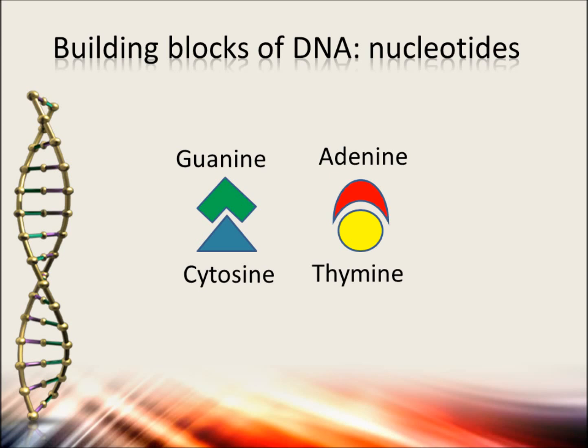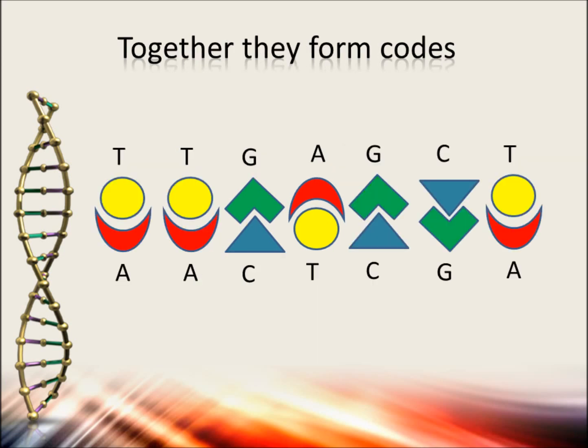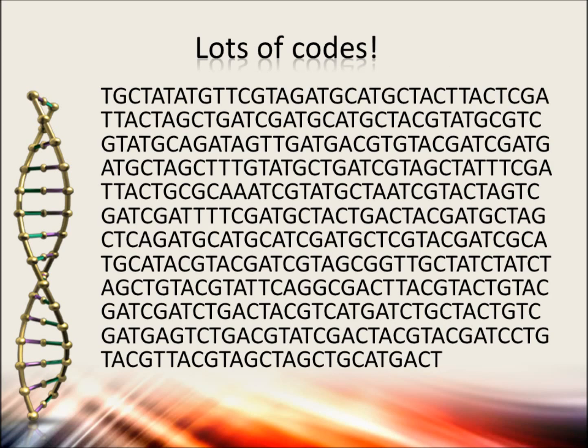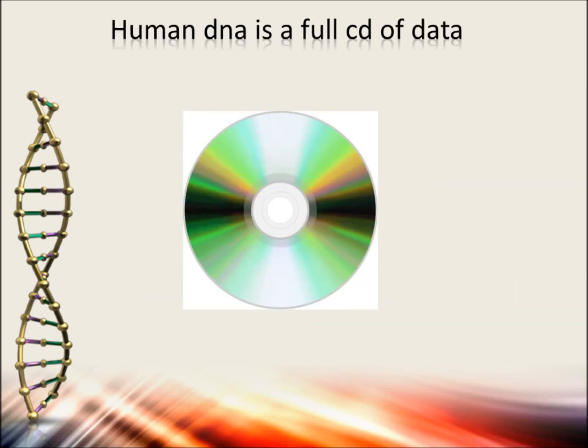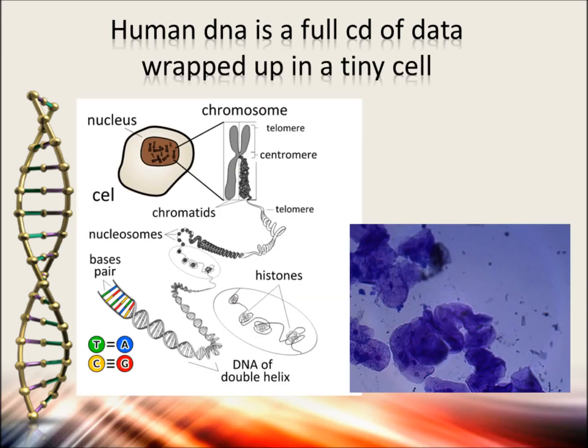Guanine and cytosine fit nicely together, and adenine and thymine fit nicely together. Together they form base pairs. Those base pairs form strings of codes — lots of codes. In fact, the human DNA is as much as a full CD of data, but then wrapped up in a tiny cell.